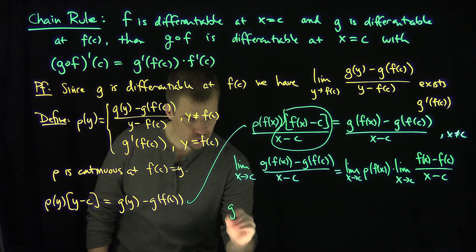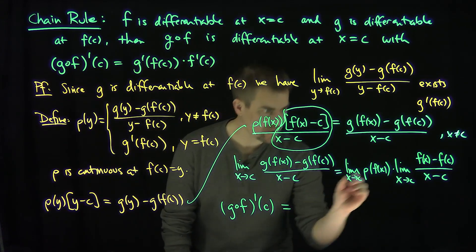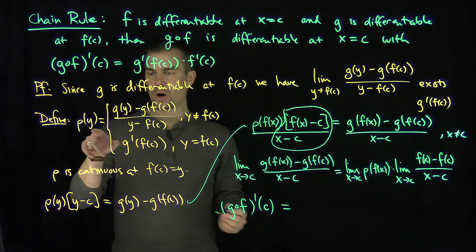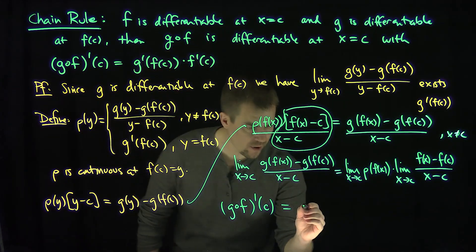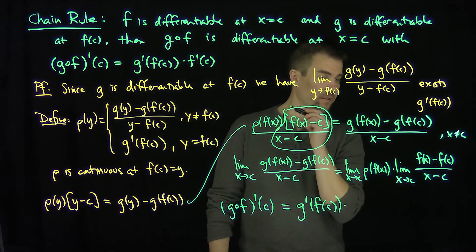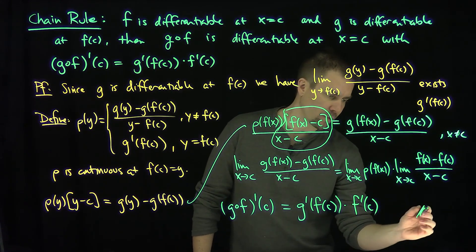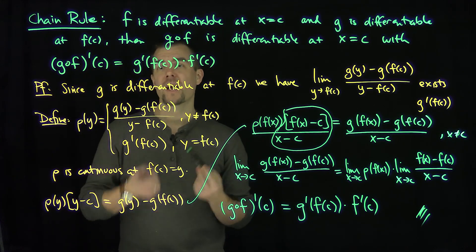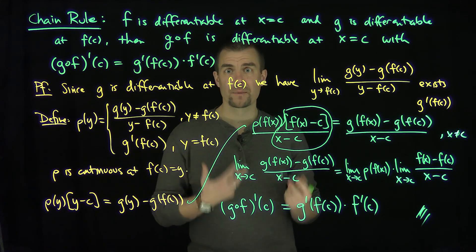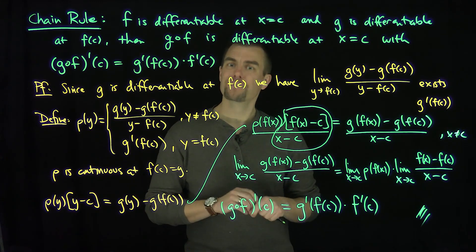This tells me that g of f prime of c exists, and it equals the limit as x goes to c of rho of f of x, which is rho of f of c, equal to g prime of f of c, times f prime of c. And that is the proof of the chain rule. It stems from the fact that rho has a removable discontinuity at f of c. By defining it via a continuous extension, the function has a limit there, is continuous, and therefore the chain rule is valid. Thank you very much.